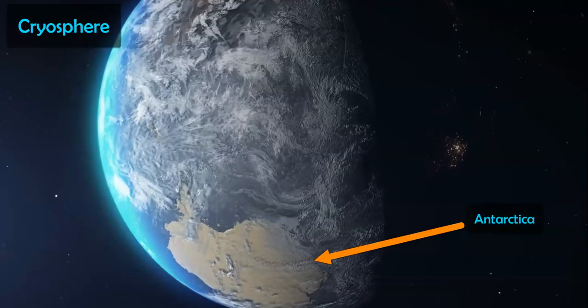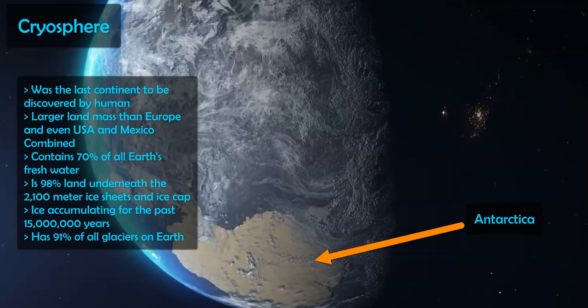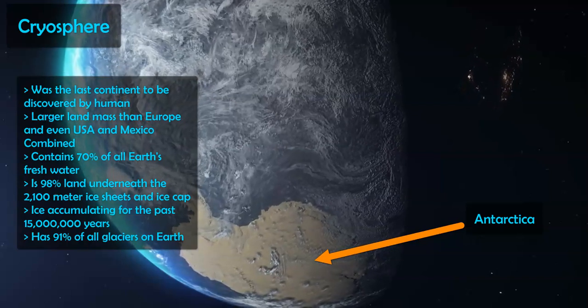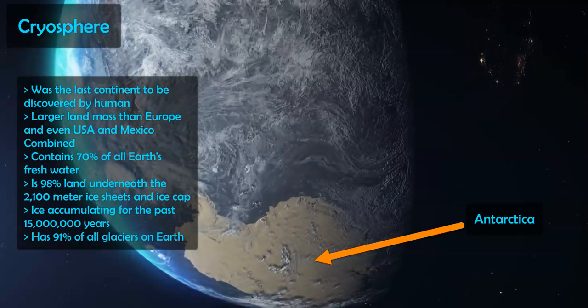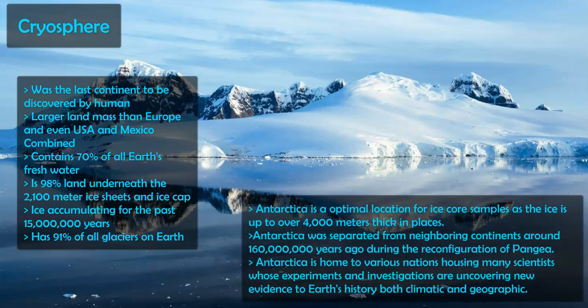One of the big topics discussed when looking at the cryosphere is the continent of Antarctica, which was discovered apparently around 1820 — it was the last continent to be discovered by humans. There's no one living there permanently. Antarctica has been frozen with ice sheets and glaciers for the last 15 million years, give or take a few million years, and has been separated from the other continents like Africa, India, and Australia for the past 160 million years.